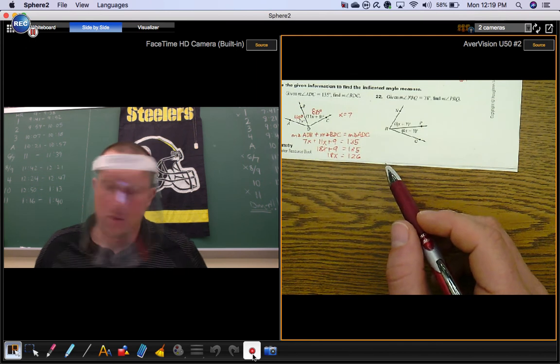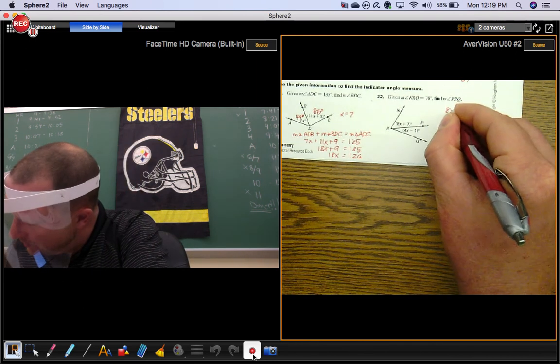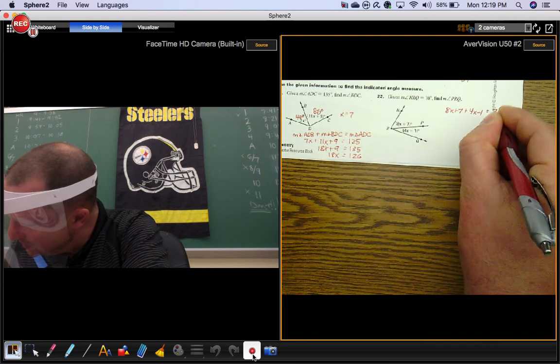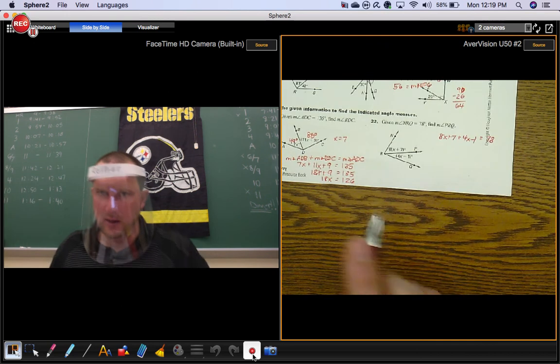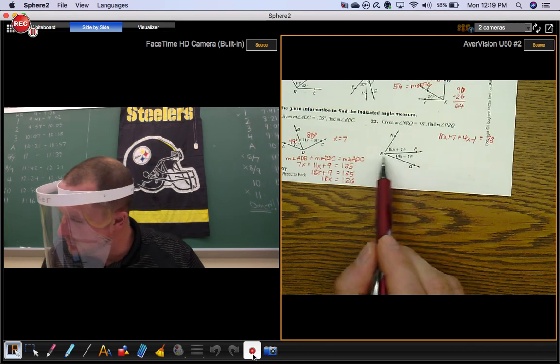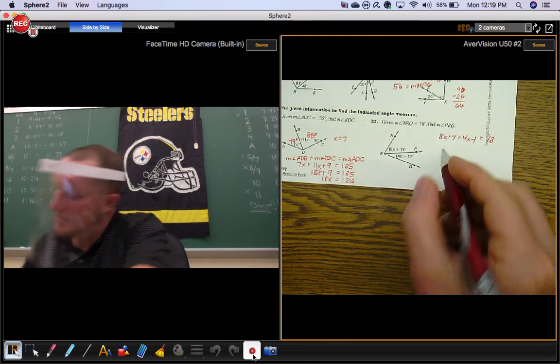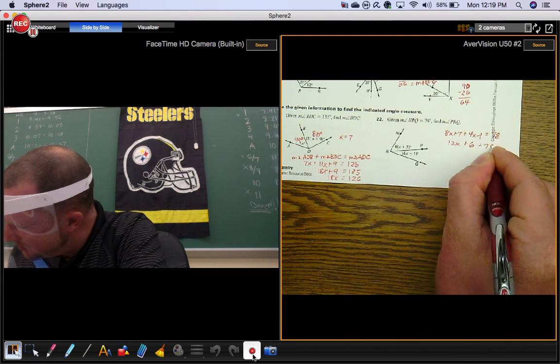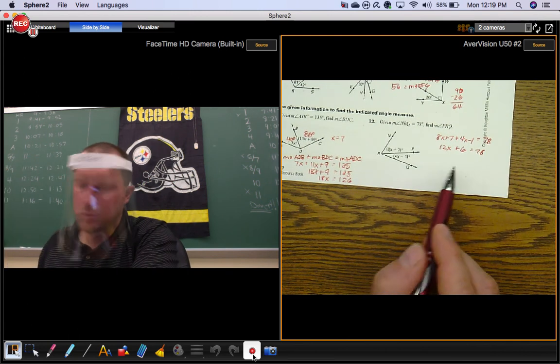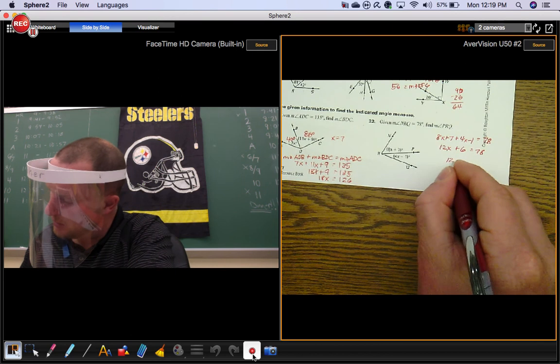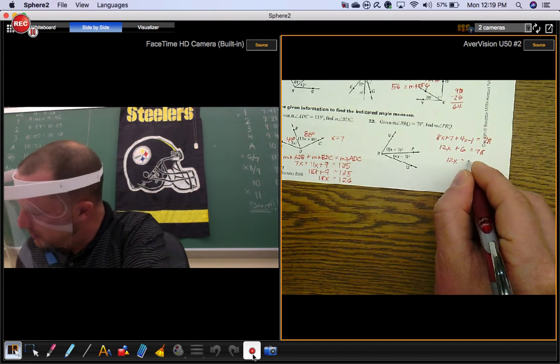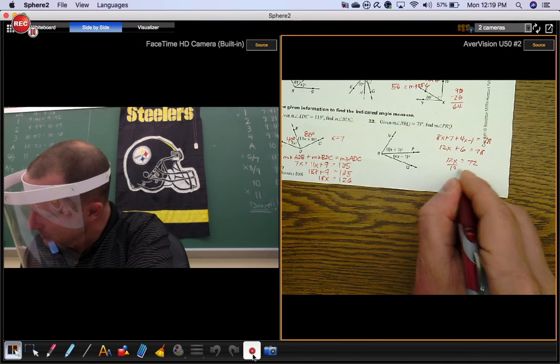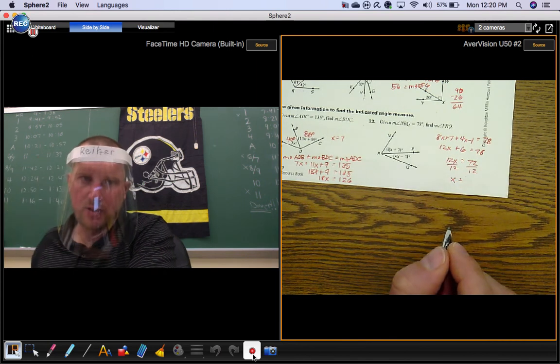Okay, 22. Maybe pause the video, try this one on your own if you haven't. Your two little angles together need to give you the big angle, which they tell you is 78 degrees. Combine your like terms. We're going to subtract 6 from both sides, and then we'll divide by 12.